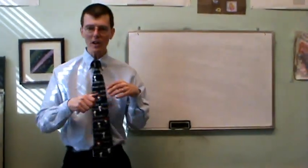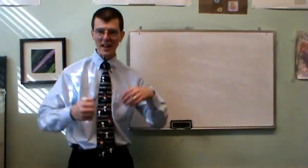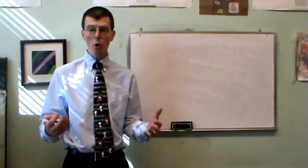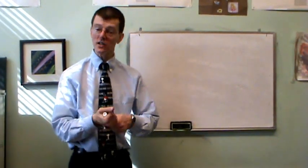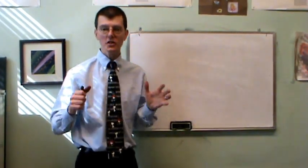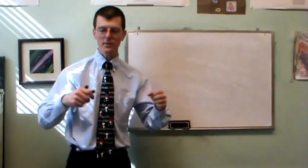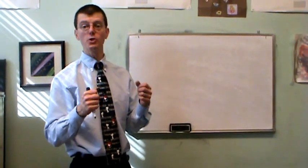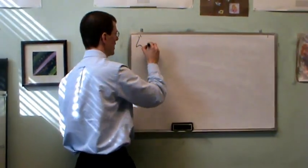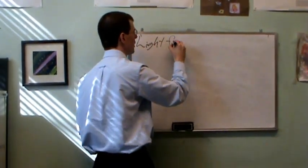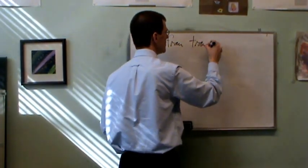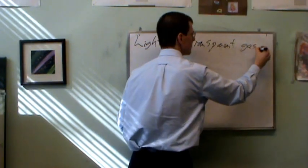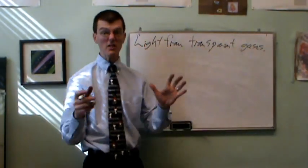All right, so we know a little bit about thermal blackbody spectra that tells us the temperature of an object but nothing else. I'm going to need to know more than that, and fortunately there is a way. These opaque objects emit their thermal blackbody spectrum, but now we need to talk about light from transparent gases. Light from transparent gases, and this is even more useful.